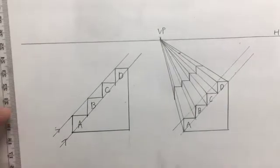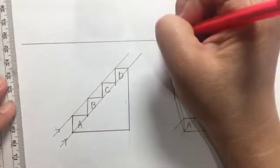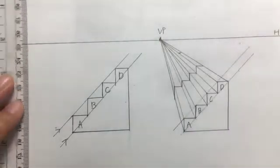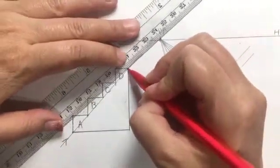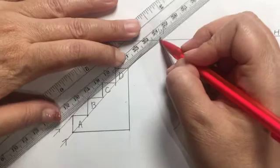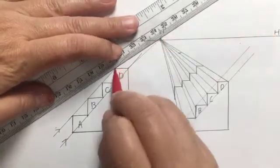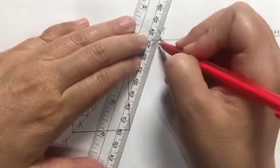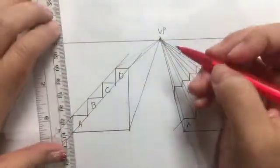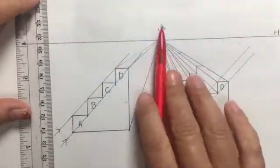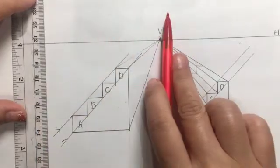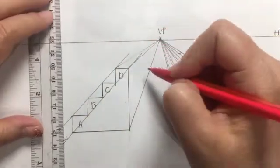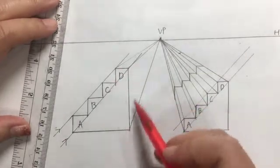And then I'm going to use the same VP. From here I'm going to draw the line from corner to the VP, corner to the VP, corner to the VP.